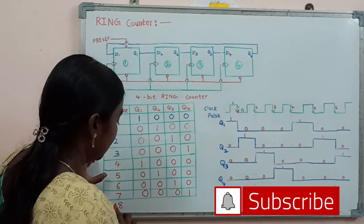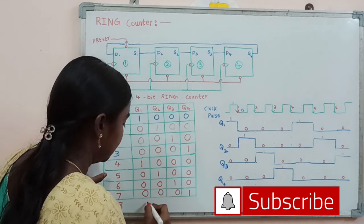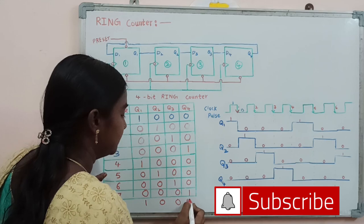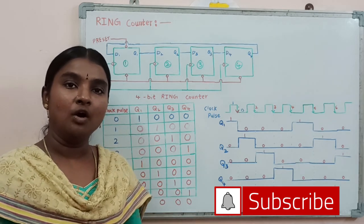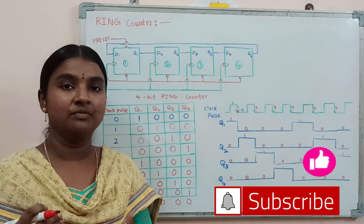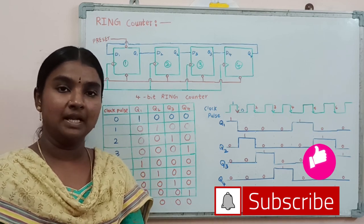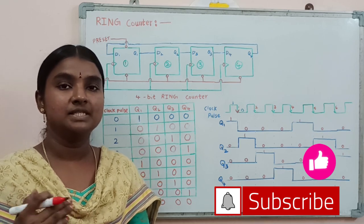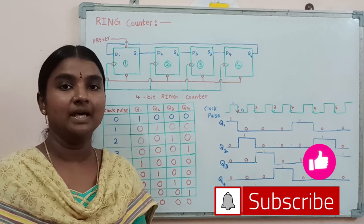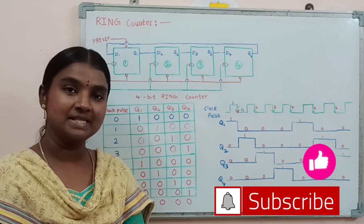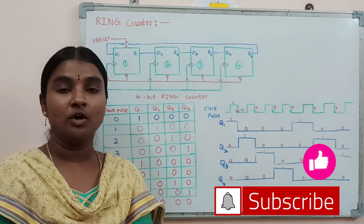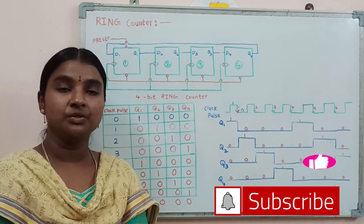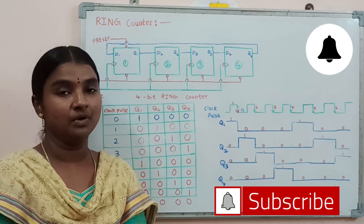When the eighth clock pulse is applied, the 1 translates back to the first flip flop and the three zeros follow. In general, for however many bits the ring counter has, that is the number of clock pulses in one full cycle, after which the sequence repeats in the same fashion. This is the working operation of the 4-bit ring counter, which is always used for counting the number of clock pulses.